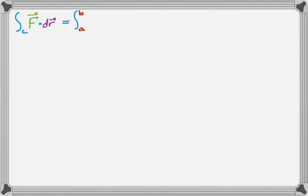We have f of r of t, and that's going to be dot product with r prime of t, and then dt.